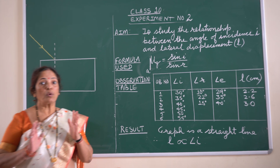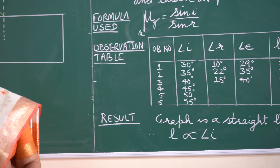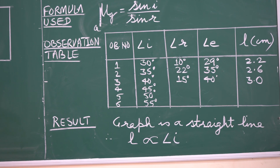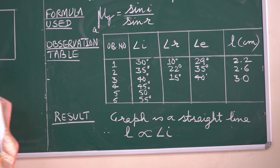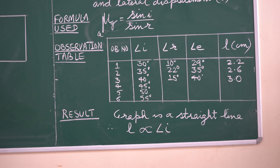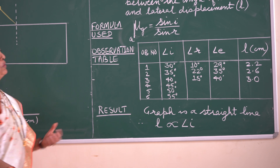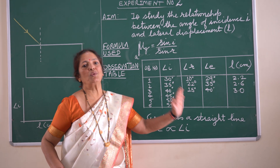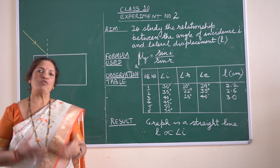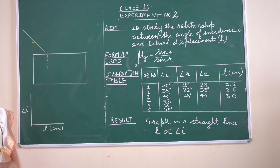That means you are going to find observations for six angles, each on a different sheet of paper. We start with the first angle, 30°. Once you perform your experiment, you will fill in the observation table with all the values you get. Let me explain how we are going to do the experiment.